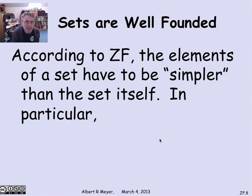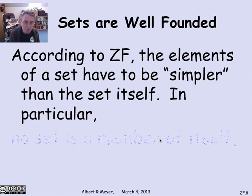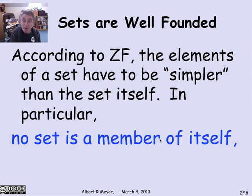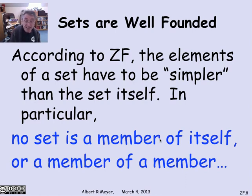Another particularly interesting axiom of ZF addresses this issue of self-membership and self-reference. It's the intuitive idea that the elements of a set have to come before the set itself. They have to be simpler than the set itself. In particular, you can't have a set be a member of itself, because then it's not being built from things that are simpler than it is. In fact, you can't even have a set that's a member of a member of itself. All of that kind of indirect membership is forbidden.